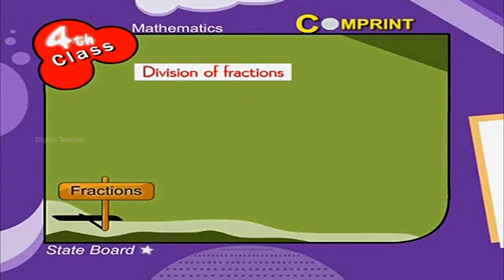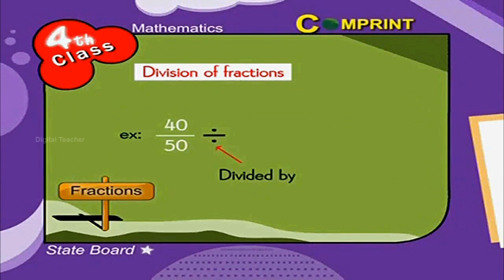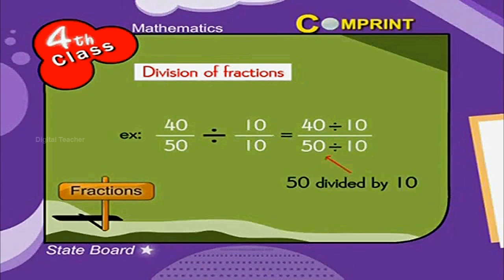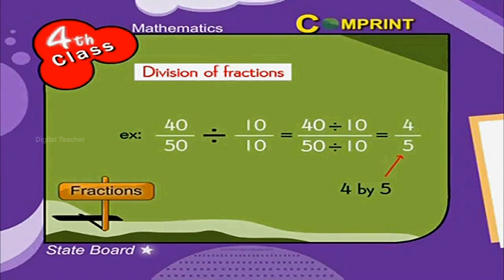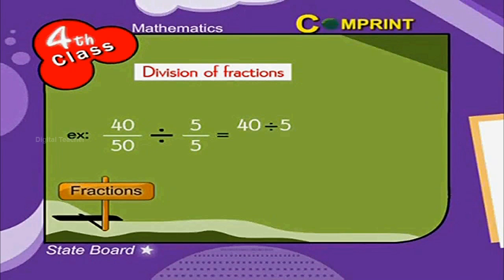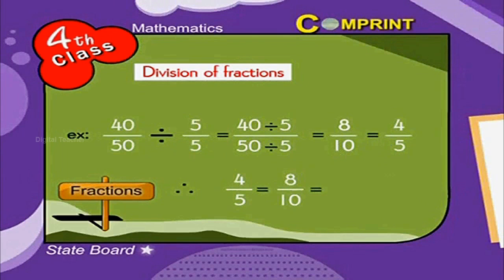Division of fractions: If the numerator and denominator of a fraction are divided by the same quantity, the value of the fraction does not change. For example, 40 by 50 divided by 10 by 10 can be written as 40 divided by 10, over 50 divided by 10, which equals 4 by 5. Another example: 40 by 50 divided by 5 gives 40 divided by 5 over 50 divided by 5, which becomes 8 by 10, resulting in 4 by 5. Therefore, 4 by 5 equals 8 by 10 equals 40 by 50.